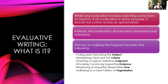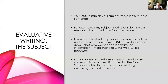The key to making sure you are approaching this in the right way is to think about these characteristics: you are adequately describing your subject, establishing clear and fair criteria, asserting a logical definitive judgment, providing convincing supporting evidence, employing an impartial and reasonable tone, and adhering to a clear pattern of organization. We are going to look at each of these individually so that you can make sure you are achieving each of those, so that your evaluation paragraph does exactly what it's supposed to do in a convincing way.